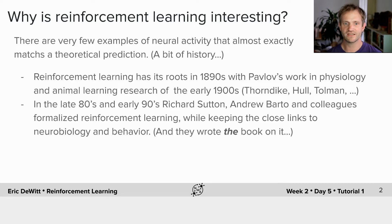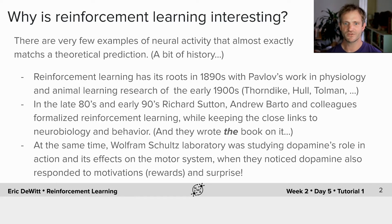But it was in the late 1980s and early 1990s that Richard Sutton and Andrew Barto and colleagues formalized reinforcement learning while keeping the roots close to the neurobiology and behavior, and they wrote the book on reinforcement learning called An Introduction to Reinforcement Learning, and I highly recommend it. At the same time, Wolfram Schultz Laboratory was studying dopamine's role in action and its effects on the motor system when they noticed that dopamine also responded to motivations, or rewards, and surprise.